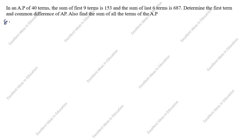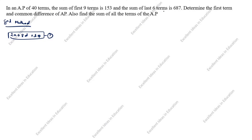Now we will see the second method. The given data is the same: number of terms is 40, sum of first 9 terms is 153, sum of last 6 terms is 687. The formula for sum of first n terms is Sn = n/2 × (2a + (n−1)d).